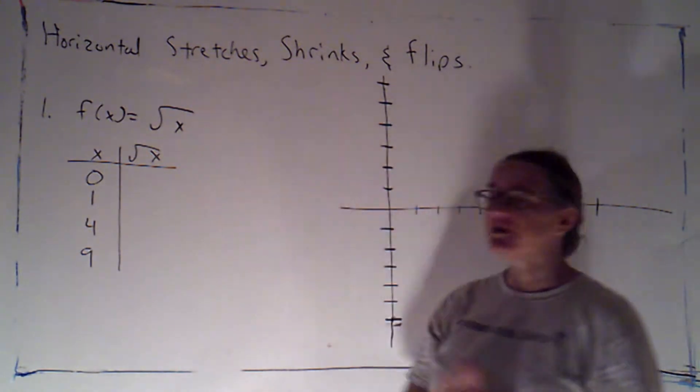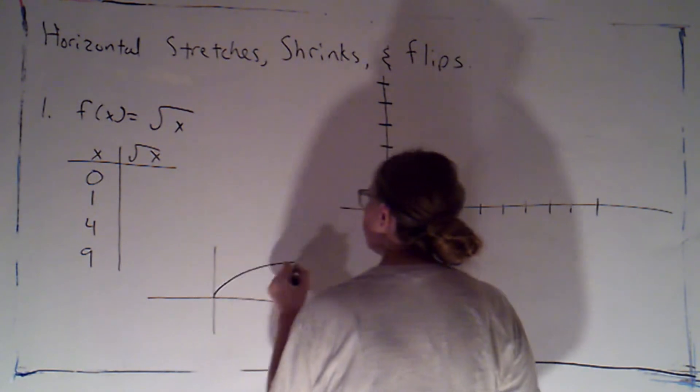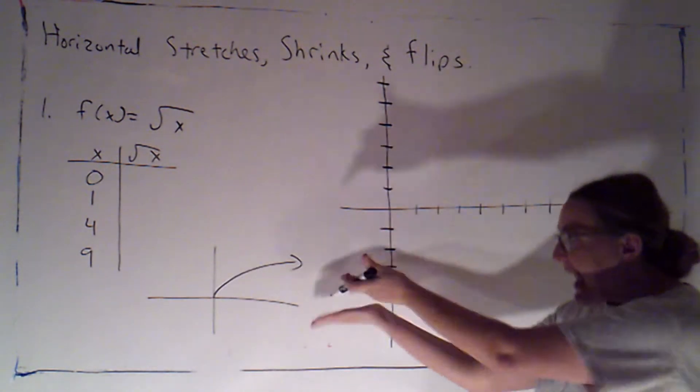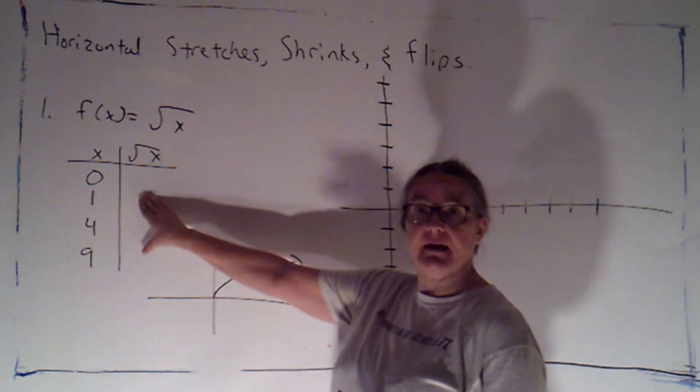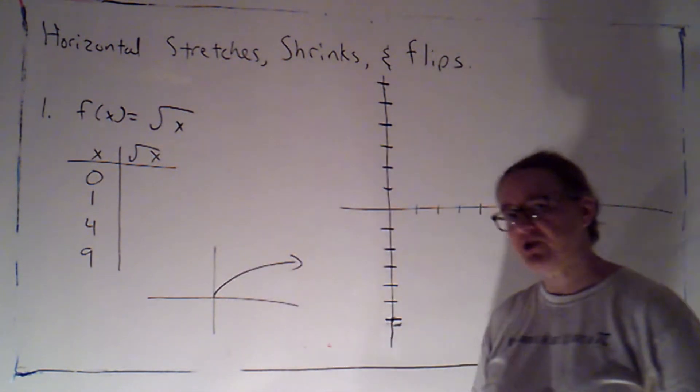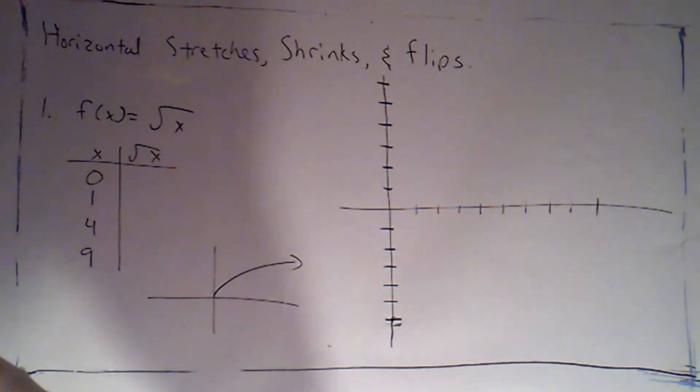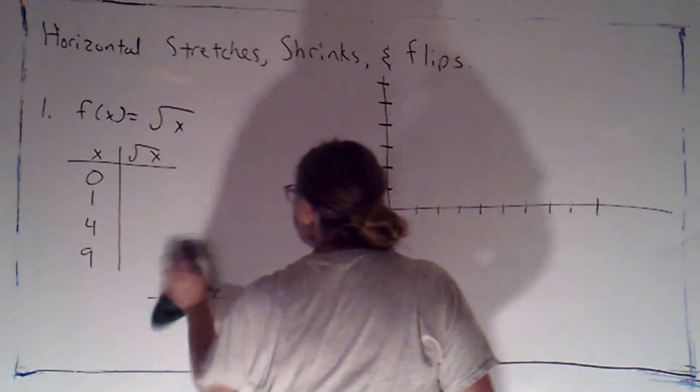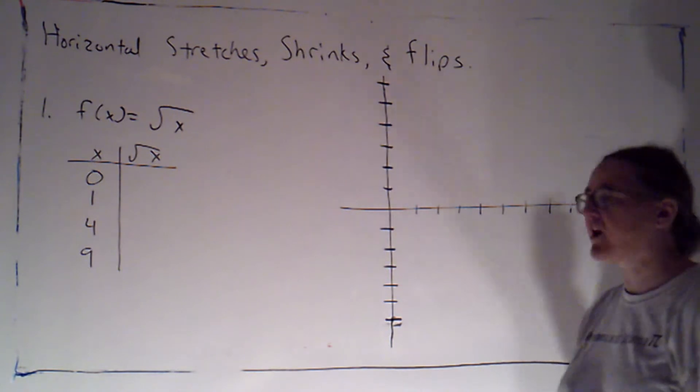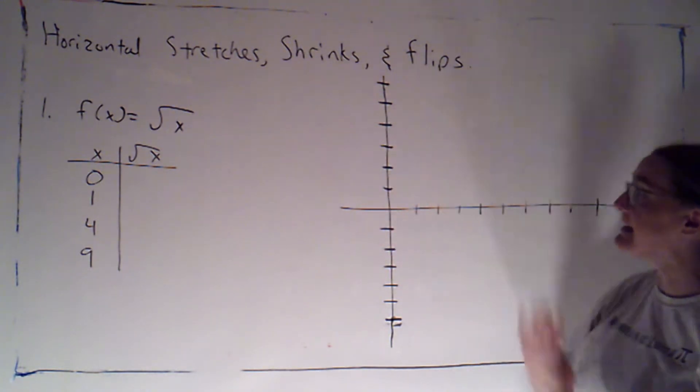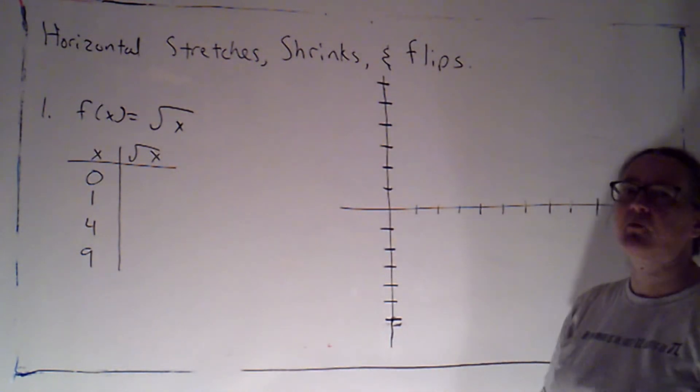The parent function I've chosen to use is the square root function. Once again, you should at this point be able to just sort of sketch that freehand. You shouldn't need to rely on a table of values to know the shape of that graph. I'm using the table of values because I want to be able to compare points on the parent graph to points on the transformed graph so that I can see exactly what's happening, and this just helps me make sure that I'm getting things to approximately the right scale.